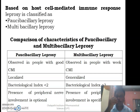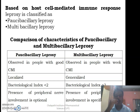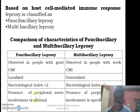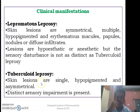Leprosy can also be classified based on cell-mediated immune response as paucibacillary and multibacillary leprosy. Paucibacillary leprosy is observed in individuals with a good cell-mediated immune response and presents with localized symptoms; the bacteriological index is less than two, and peripheral nerve involvement is rare. Multibacillary leprosy is seen in those with a weak immune response, with generalized symptoms, a bacteriological index greater than two, and specific peripheral nerve involvement.